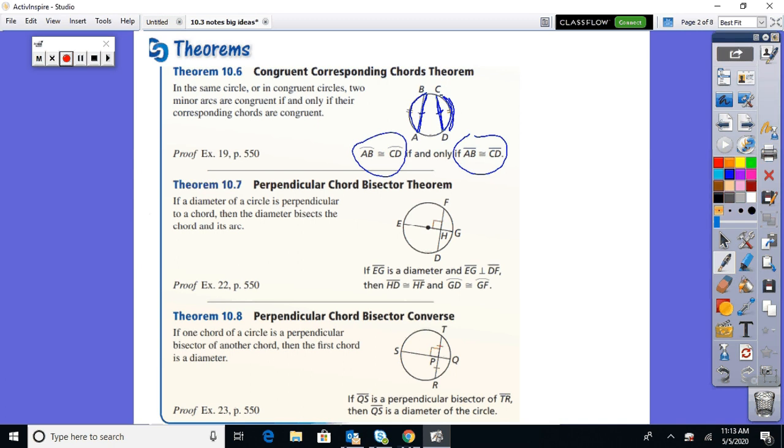These next two kind of go hand in hand. Look at the situation that you have right here. You've got a diameter of a circle, if it's perpendicular to a chord. Of course it doesn't have to be. You could have a diameter like this and a chord like that. But when they are perpendicular...